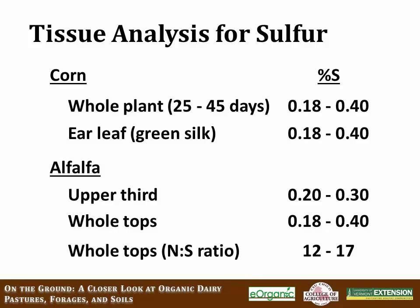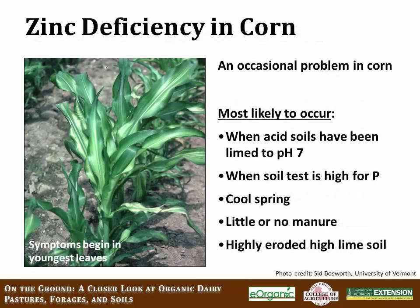Zinc deficiency has been an occasional problem in corn, especially in the Northeast. Symptoms begin on the youngest leaves. Zinc deficiencies can occur when acid soils have been limed to a pH of 7, since going from a relatively acidic soil to pH 7 can cause zinc tie-up. When soil test phosphorus is high, zinc can also be tied up. Sometimes deficiencies occur in cool spring conditions or on soils that have had little or no manure.